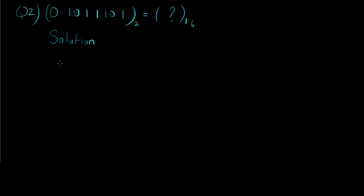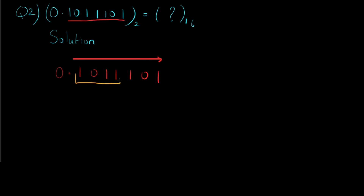Question number 2 consists of a fractional binary number. In this case we are only interested in the fractional part. For fractional values, we start making pairs from left to right of the decimal point. So here, 1011 will be the first pair, and 101 with an additional 0 just for pairing purpose will be the second pair. This extra 0 doesn't have any positional value — it's just for pairing. Now we convert these pairs to their hexadecimal equivalents.